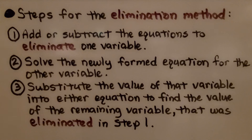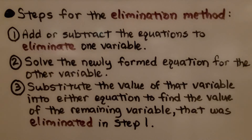Here are the steps for the elimination method. First, we add or subtract the equations to eliminate one variable. Second, we solve the newly formed equation for the other variable. Last, we substitute the value of that variable into either equation to find the value of the remaining variable that was eliminated in step one.